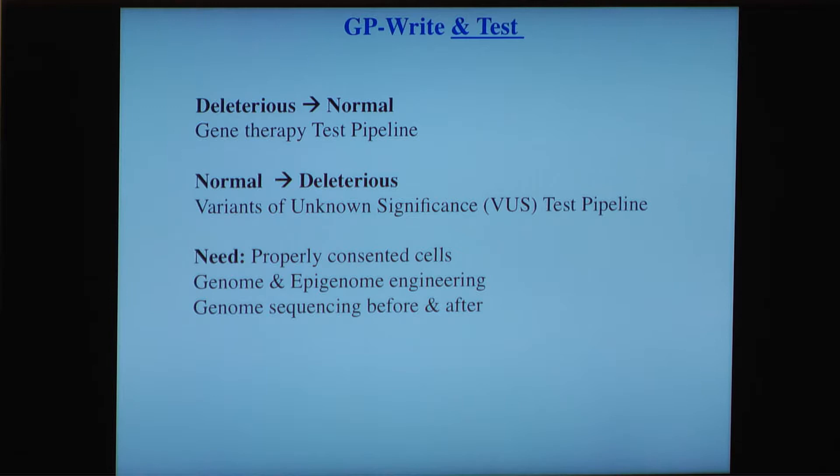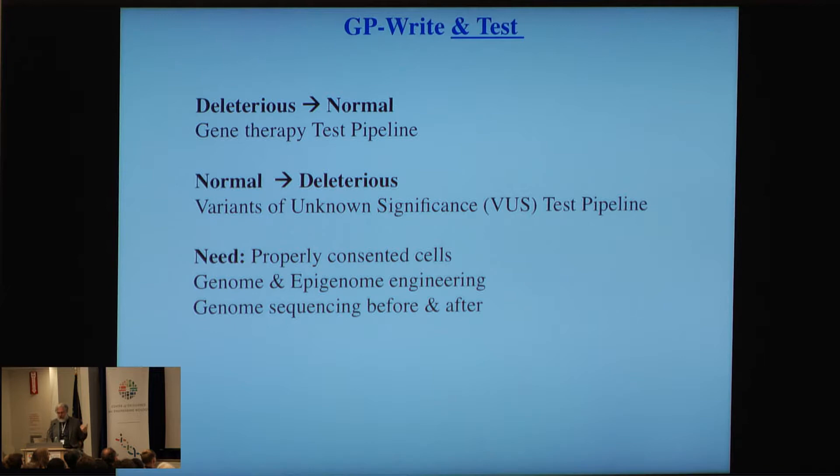We want to use these cells in two directions: one is developing gene therapies where we take a deleterious allele and turn it into a normal one, and the other is going from a normal allele to deleterious — so we can determine cause and effect for the millions of new, unknown, possibly disease-causing alleles we're finding as we start to sequence everyone on the planet.